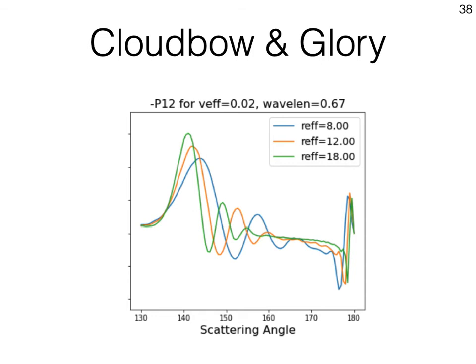Now this concept is easily demonstrated by computing the scattering phase function of a distribution of liquid droplets using Mie scattering theory. So here we are showing the polarized phase function component for three different effective radii. Now the oscillatory peaks clearly depend on the effective size of the droplets. As you can see, they shift their location in scattering angle according to the size of the droplets.